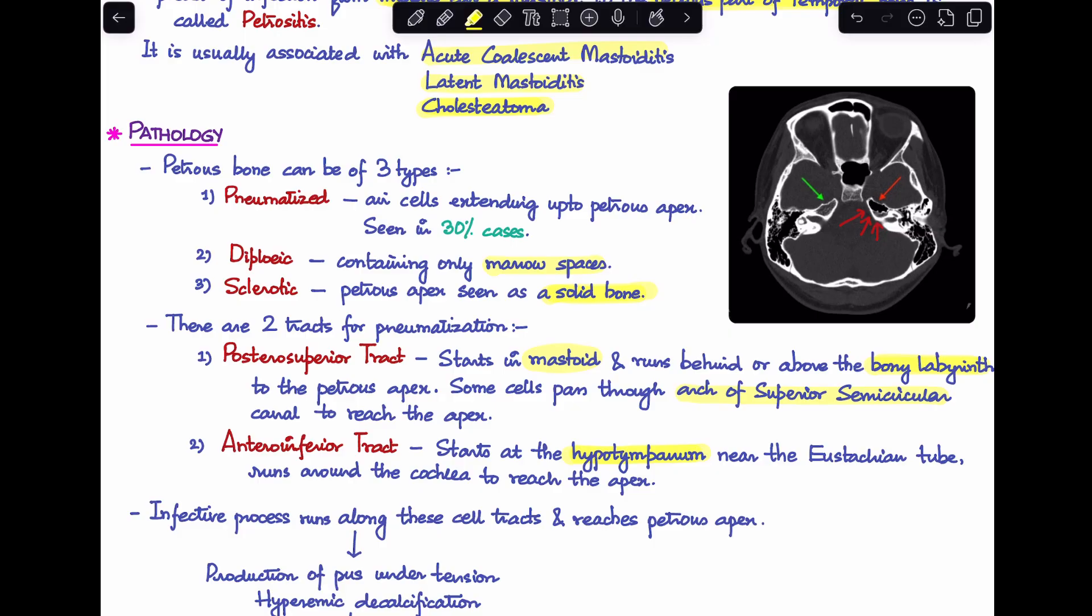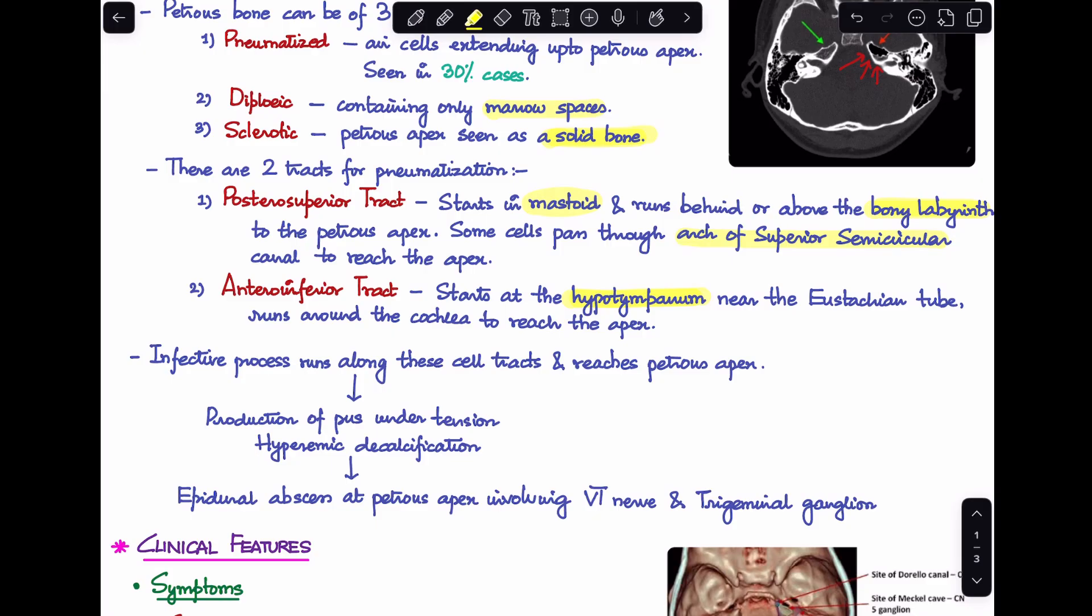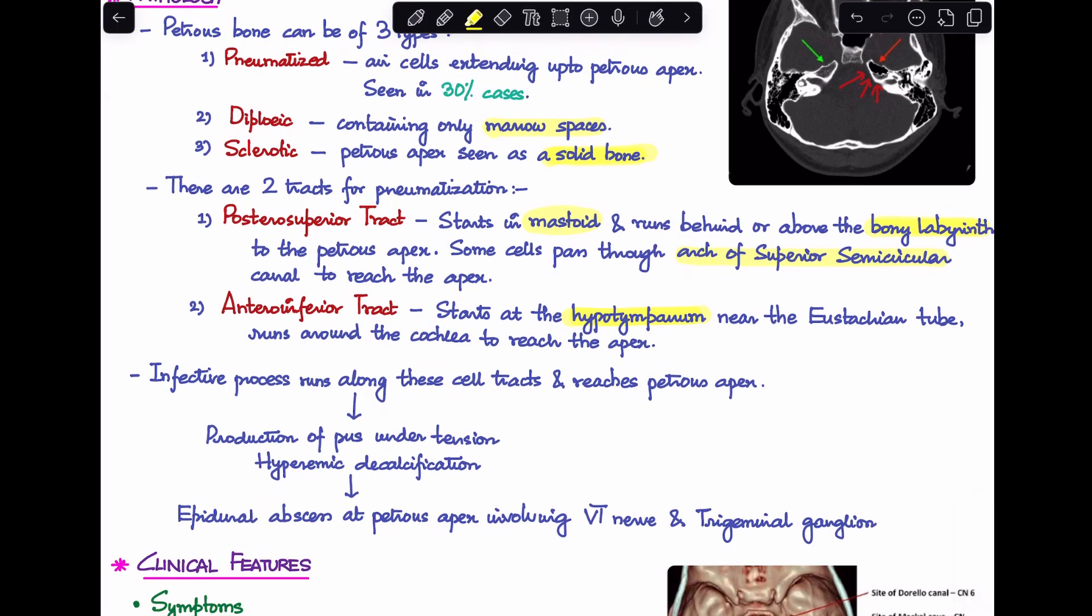So what happens is when there is an infective process involving the middle ear leading to formation of chronic otitis media, that leads to the development of mastoiditis. Once the mastoid is involved, this infective process runs along these cell tracts that I have just described and it reaches the petrous apex. Once it reaches here, it does the same pathological process that happens in acute mastoiditis. There is a production of pus, pus under tension, and hyperemic decalcification, and this leads to the formation of epidural abscess at the petrous apex involving the sixth cranial nerve or the abducens nerve and the trigeminal ganglion, leading to the typical features that you see in petrositis.